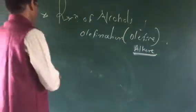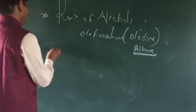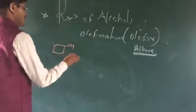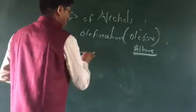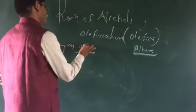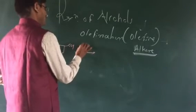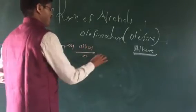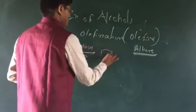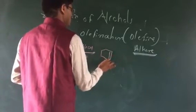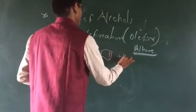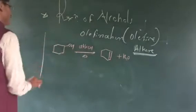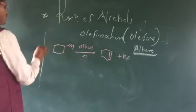Suppose we have another starting reactant molecule: cyclohexanol. This cyclohexanol is treated with alcoholic KOH, and the product formed is cyclohexene plus H2O. So what is the type of mechanism involved in this reaction?